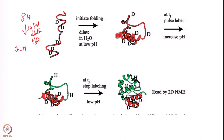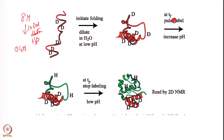Now you put a pulse label — you increase the pH at time Tf. That means you allow the system to start exchanging. At low pH it is not exchanging; you increase the pH, allow the exchange to happen for a certain time period. Whatever deuterons are accessible at this point — whatever is on the surface of the partially folded structure — will exchange to protons.